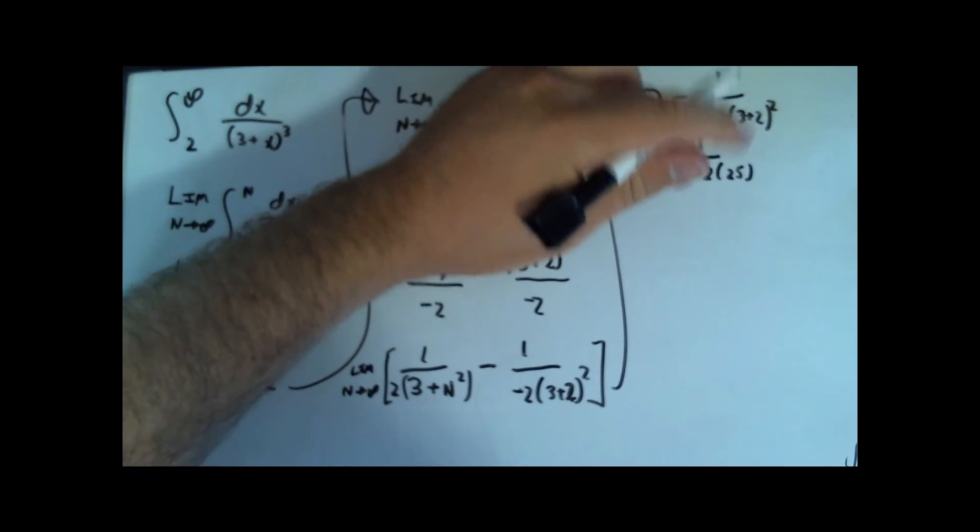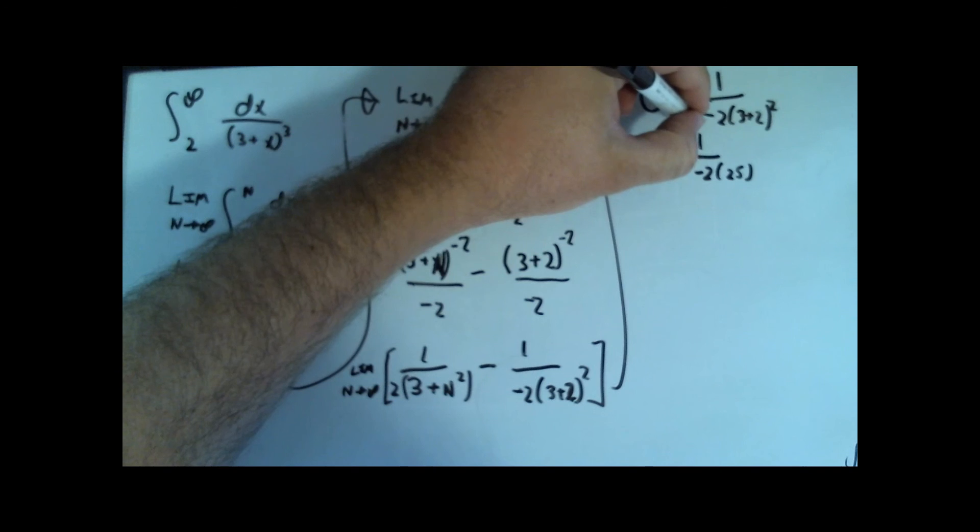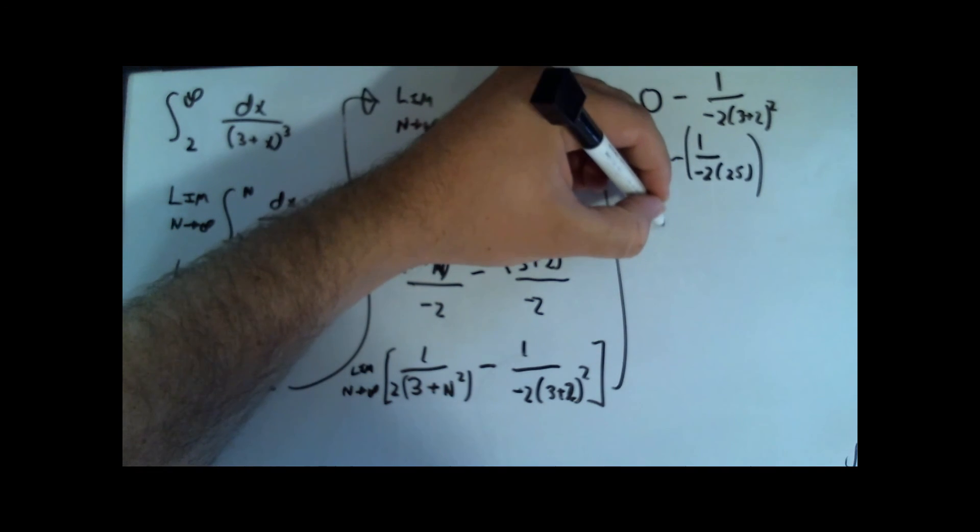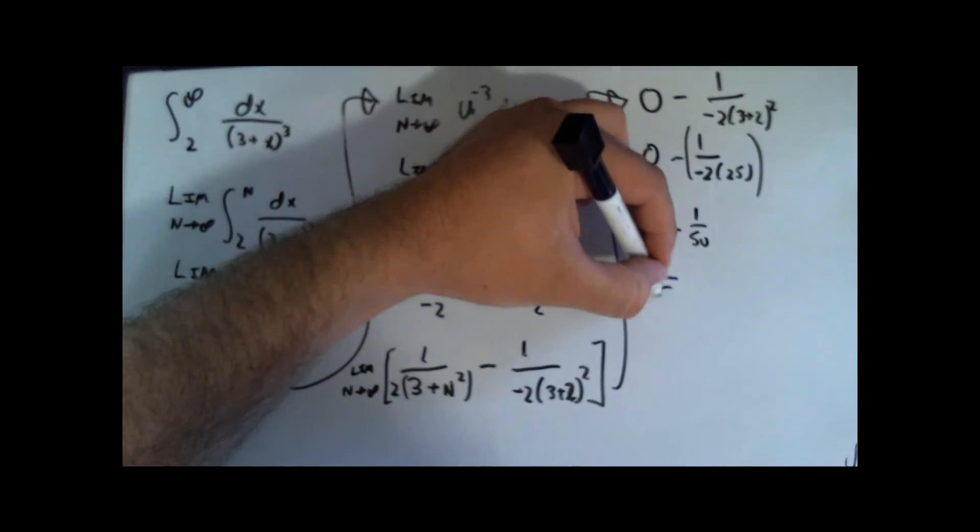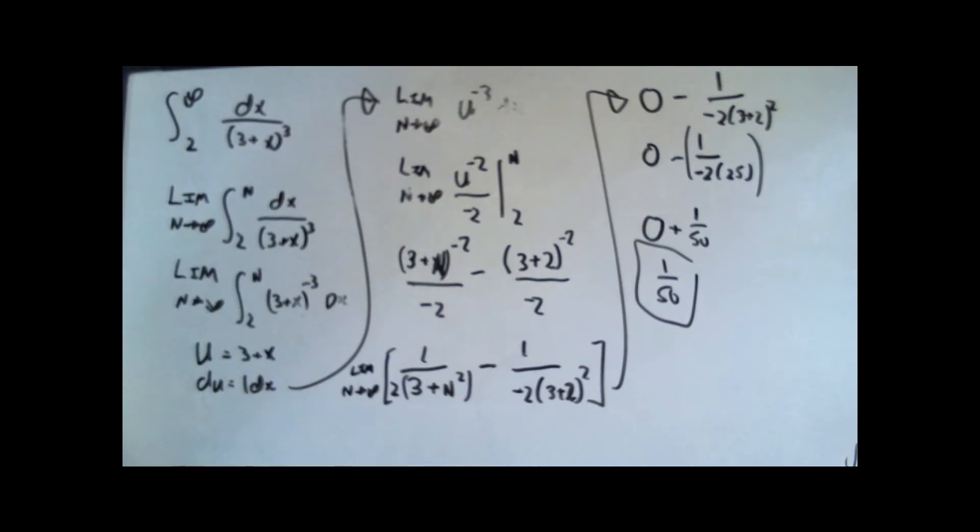I'm sorry, 0 minus 1 over negative 2 times 25. And that's going to be 0 plus 1 over 50 or just 1 over 50. And that is the answer.